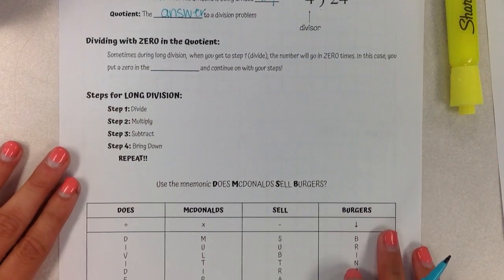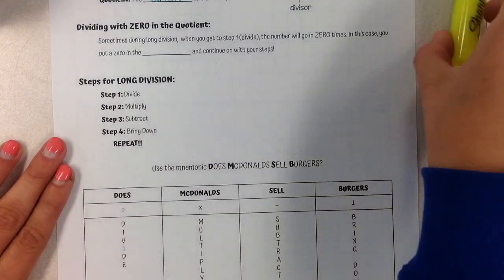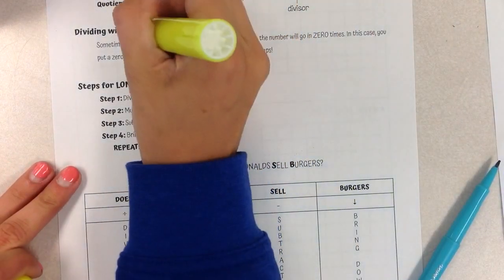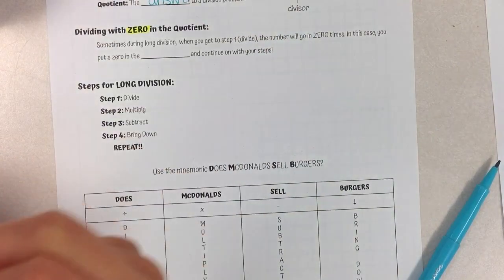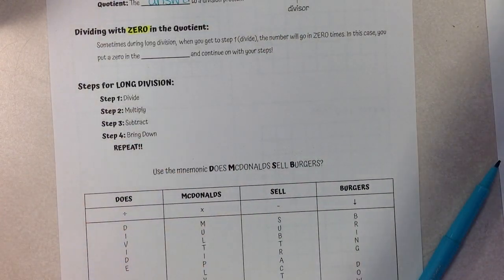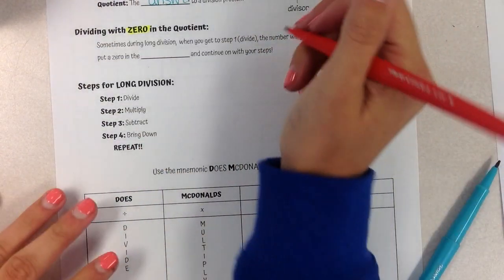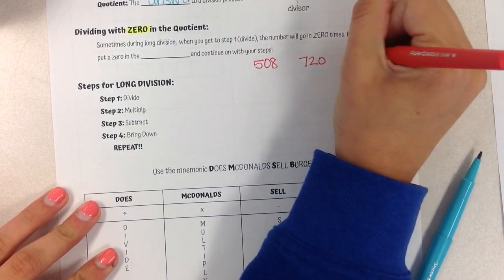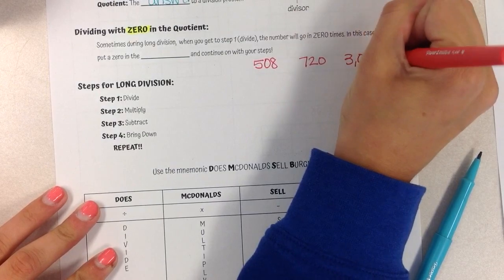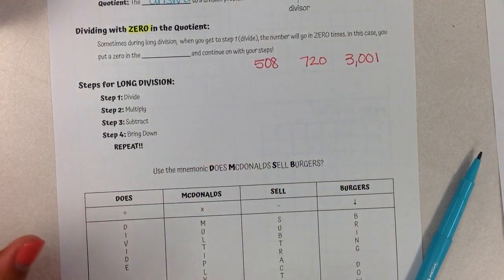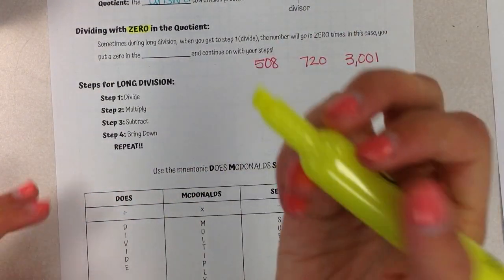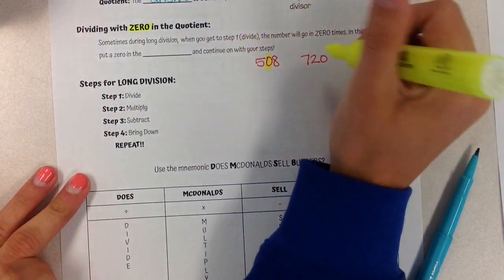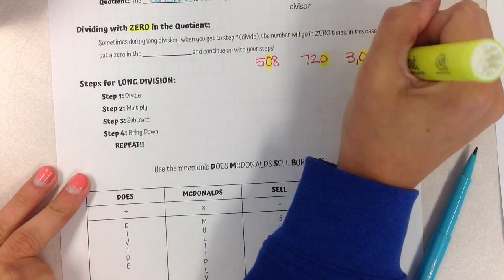Today we are looking at dividing with zero in the quotient. I want you to highlight the word zero because that should be a clue. No matter what, your answer should have a zero in it. For example, I might have 508, I might have 720, or I might have 3001. There are zeros in all of those answers. So if you get an answer without a zero, you need to go back and look at your work because you did something wrong.